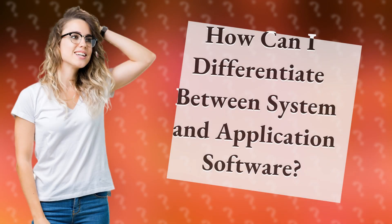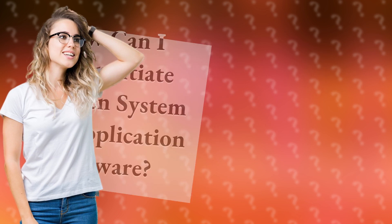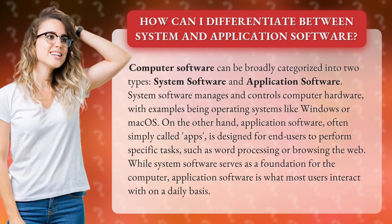How can I differentiate between system and application software? Computer software can be broadly categorized into two types: system software and application software. System software manages and controls computer hardware, with examples being operating systems like Windows or macOS.